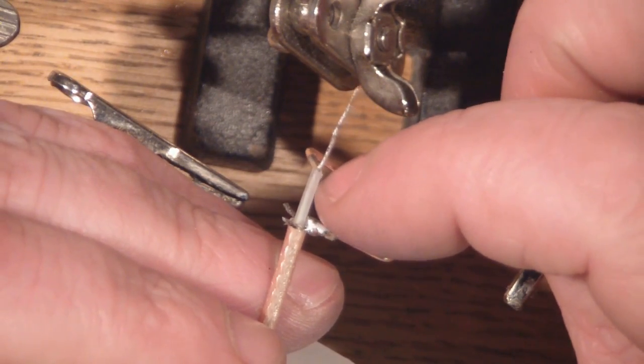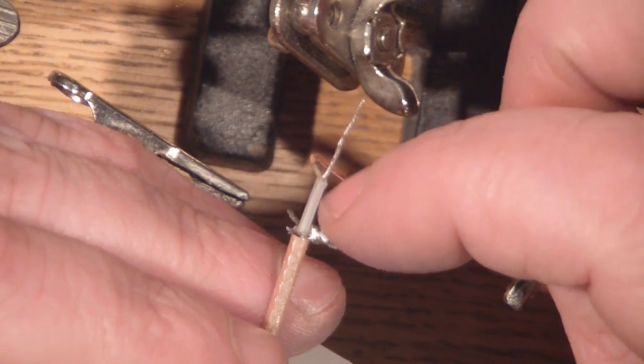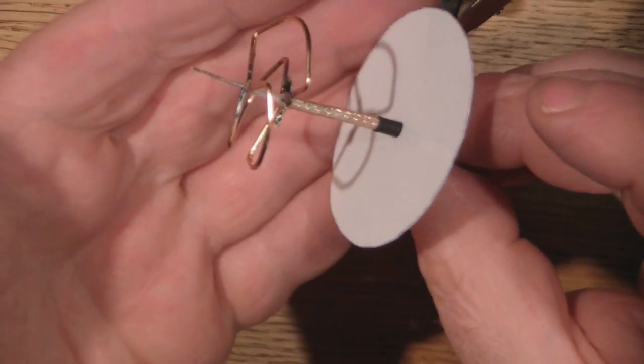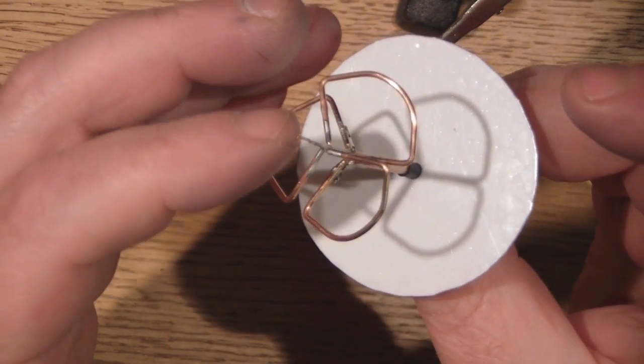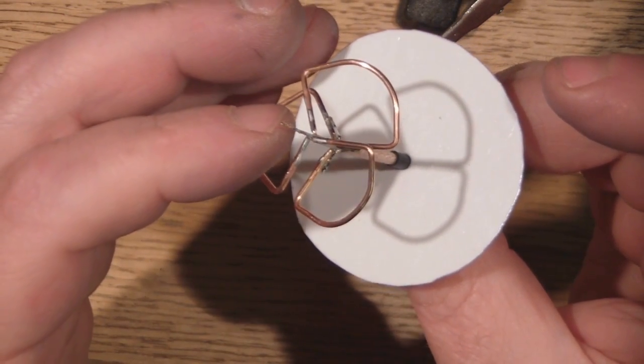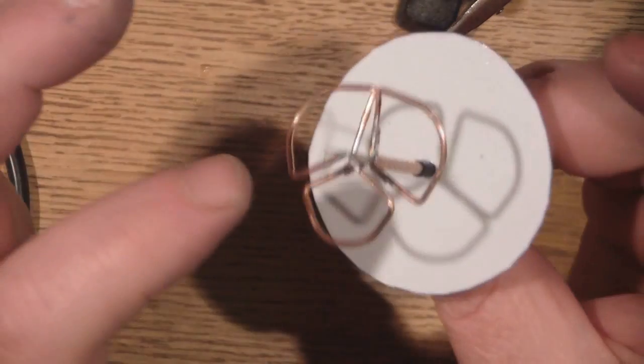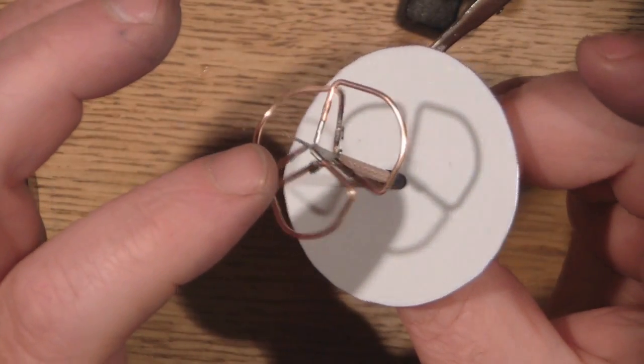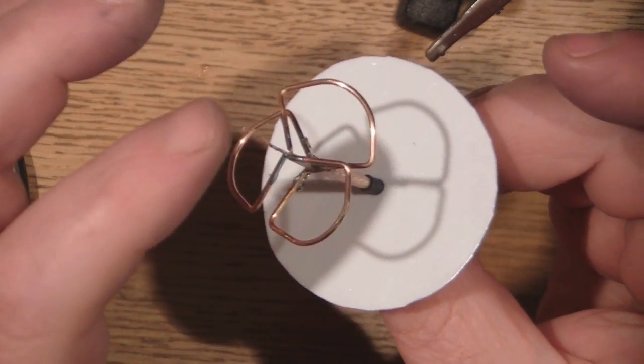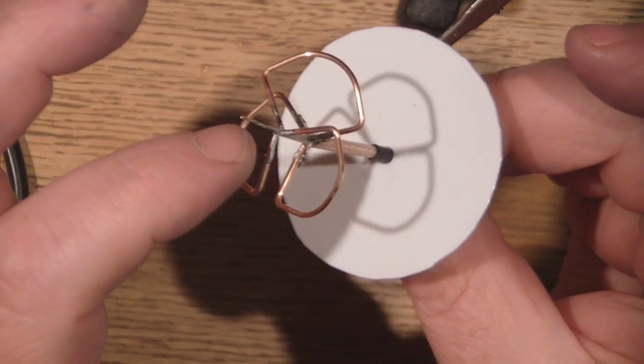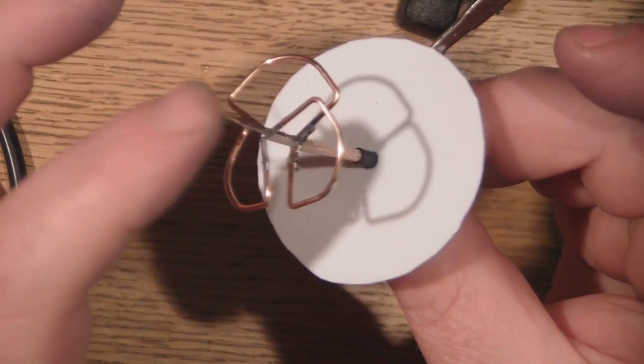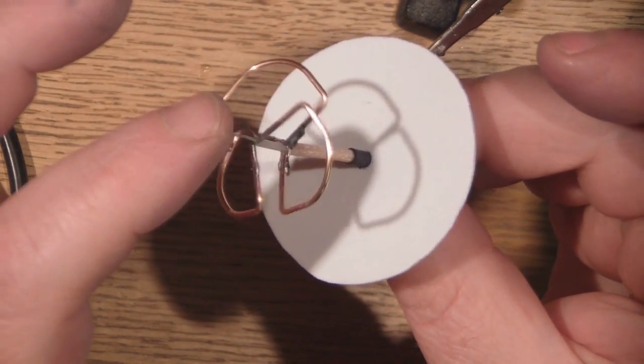You can see here that I haven't soldered on the top parts of the elements yet to the signal wire. I've just arranged them all so they're all just touching the signal wire there. What I'm going to do now is go in and add a little bit of solder so all three of them are connected.